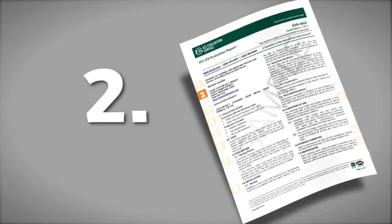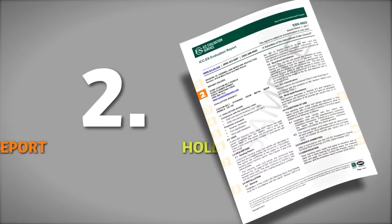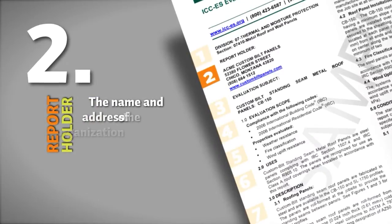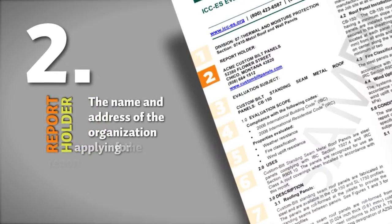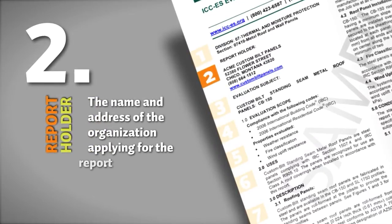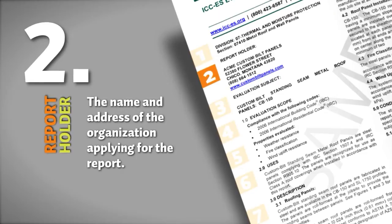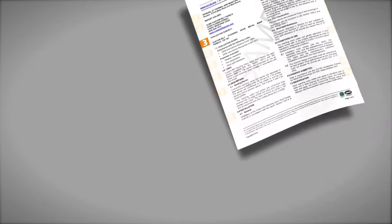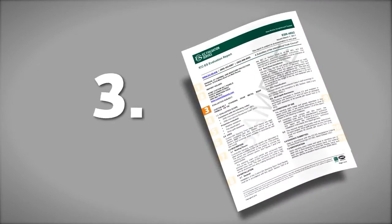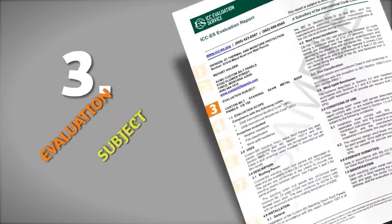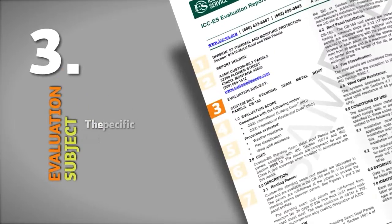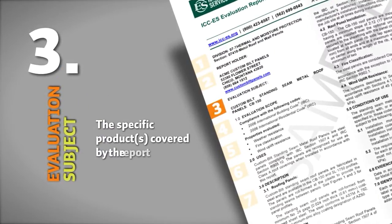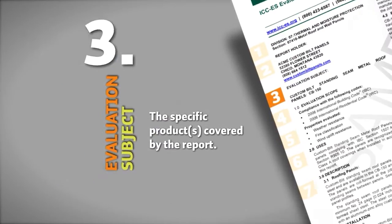2. Report Holder. The name and address of the company or organization that has applied for the evaluation report is listed. 3. Evaluation Subject. The specific products covered by the report are listed for easy reference.